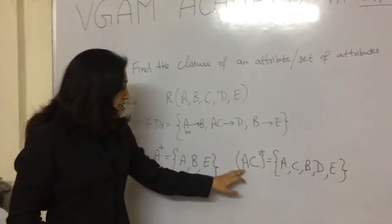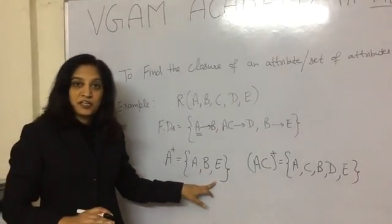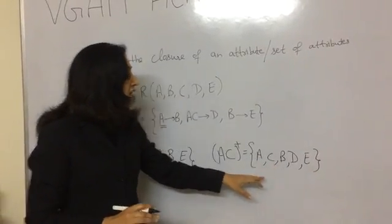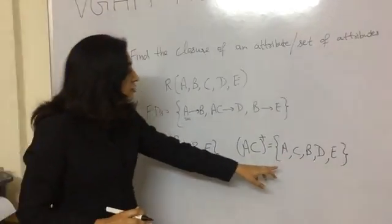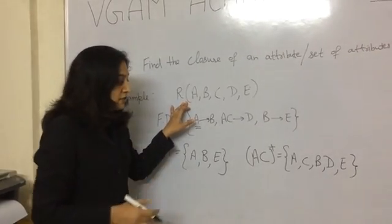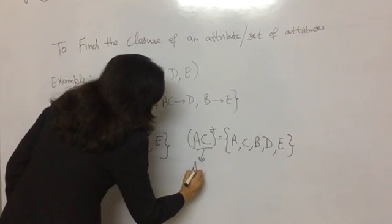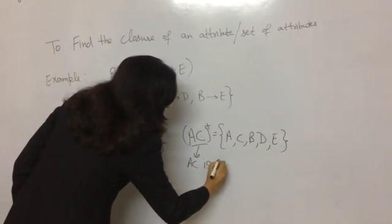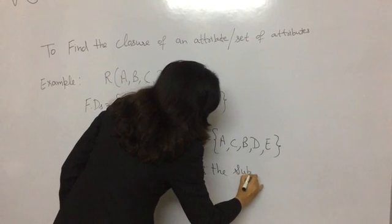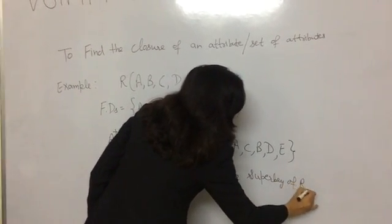Now, if you see, the closure of A contains only A, B, E — three attributes. But the closure of AC contains A, B, C, D, E — all the attributes which were part of the relation R. It contains all the attributes. So basically, we can say that AC is the super key of R, because it identifies all the attributes of R.